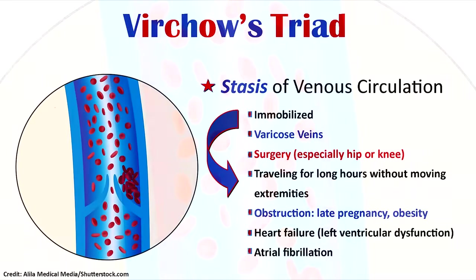Conditions that damage the valves of the veins or prevent muscle use can lead to stasis of blood flow. One cause would be a patient being immobilized, even paralyzed. Also varicose veins, where we have an issue with the vein valves. Surgery — especially hip or knee — traveling for long hours without moving the extremities, or some type of obstruction like late pregnancy, obesity, heart failure, left ventricular dysfunction, or atrial fibrillation, where the atria are not emptying well and blood is just hanging out, allowing clots to form.